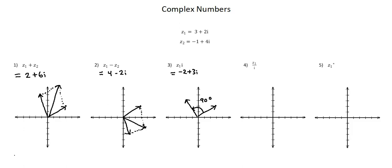Problem four: Z1 divided by i. The result of this division is 2 minus 3i. Going to the Argand diagram, we'll start with Z1, 3 plus 2i. Now, the result of our calculation, 2 minus 3i. What we see in this problem is that from the original vector to the resultant vector, there is another 90-degree rotation, this time clockwise. Thus, division by i is represented geometrically as a rotation 90 degrees clockwise.